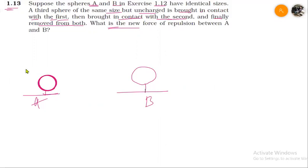Both have equal charge, the charge was originally 6.5 into 10 to the power minus 7 C and this was also 6.5 into 10 to the power minus 7 C. So let us say this is charge Q and this is charge Q, so both have equal charge.